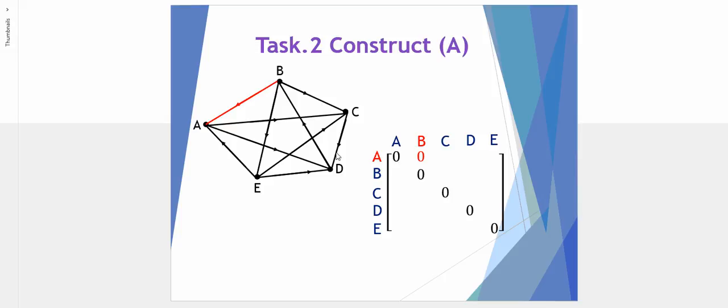Now let's look at each one of these. Player A against player B: A does not have dominance over B because there's an arrow going the other way. They're connected, B has dominance over A. So A does not have dominance over B, so a zero is entered.